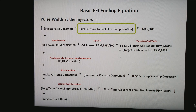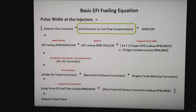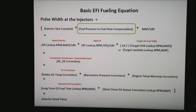The next piece is the fuel pressure to fuel flow compensation. Basically, most ECUs assume that you have between 42 and 60 psi pressure drop across the injector. In turbocharged and supercharged installations, the fuel pressure is constantly changing and so is the pressure in the intake manifold. So this is a correction factor for what is the actual pressure drop across the injector at any given time.